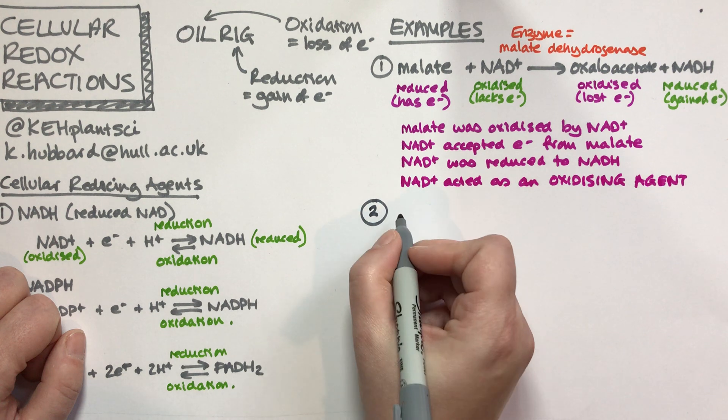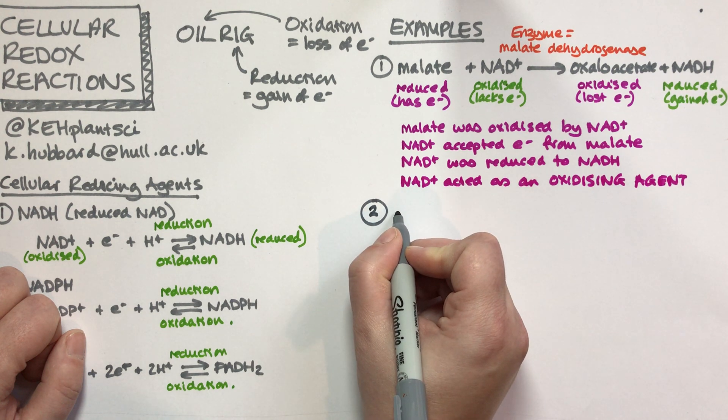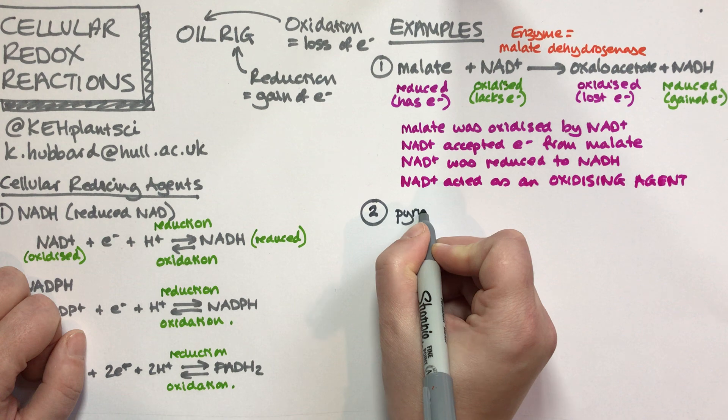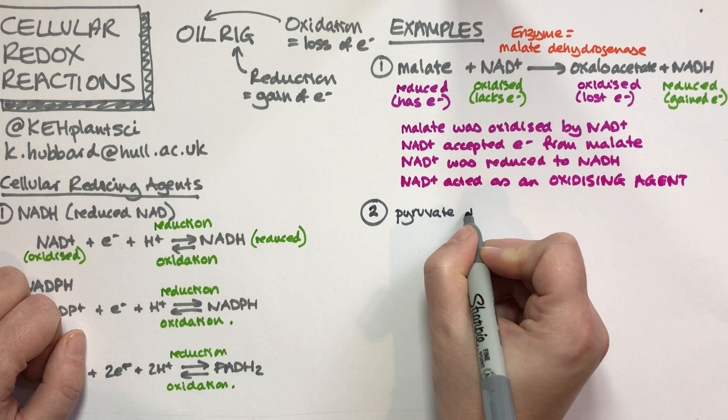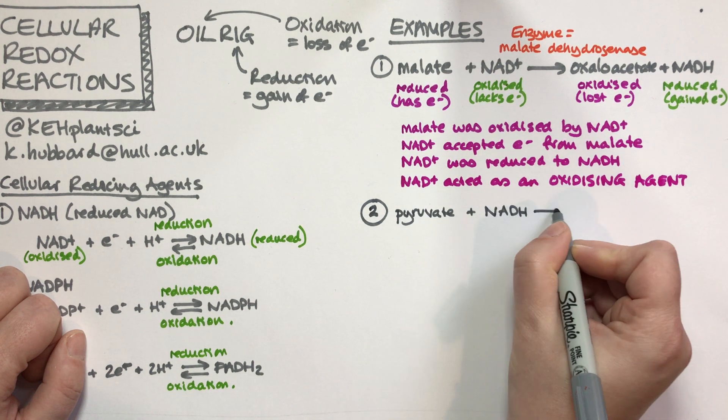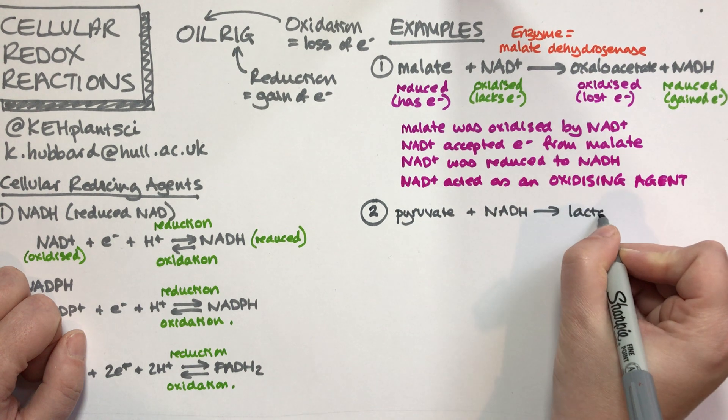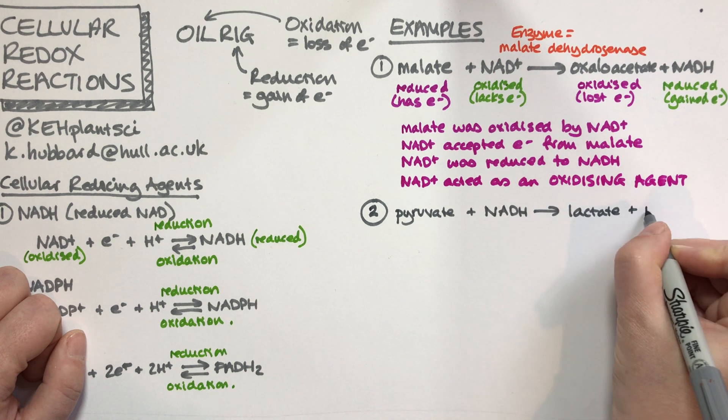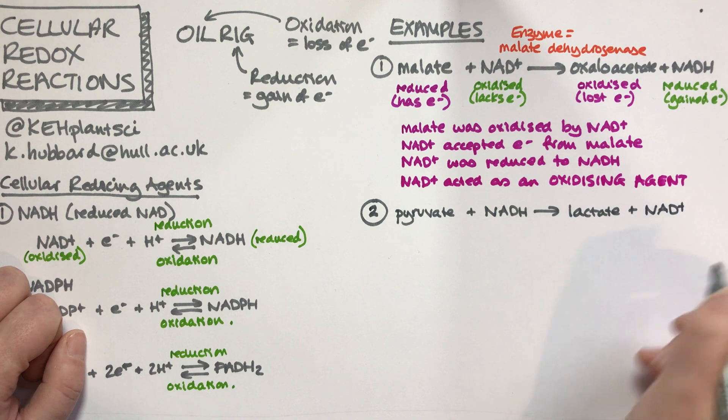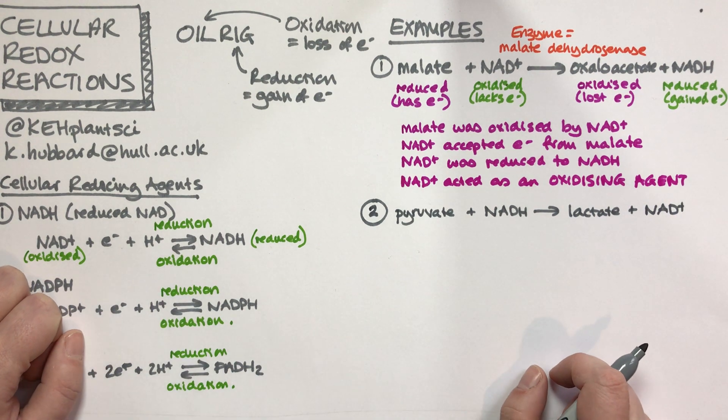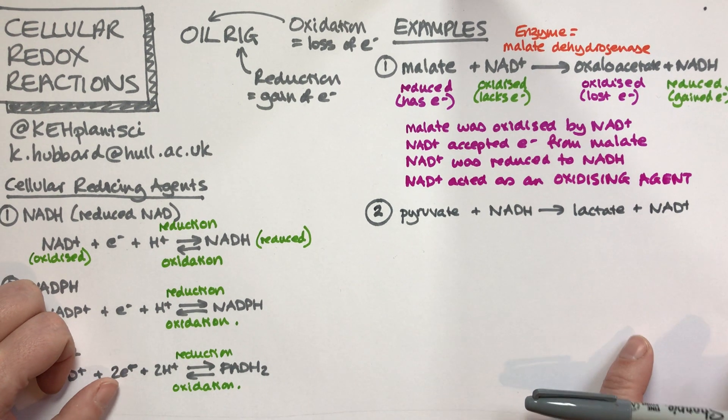Let's think about another example. We might have pyruvate plus NADH gives us lactate plus NAD+. This is a process that happens in anaerobic respiration.